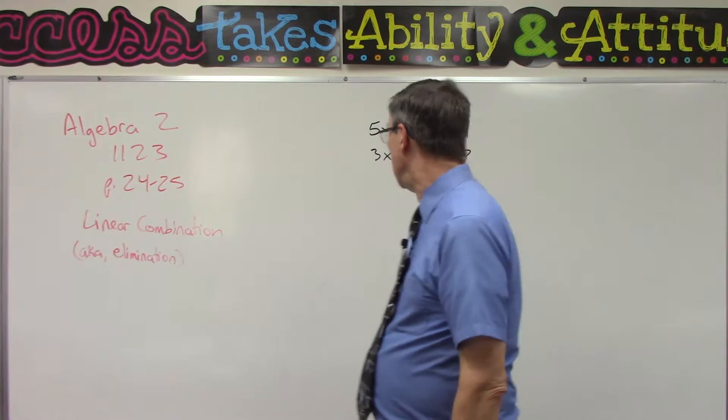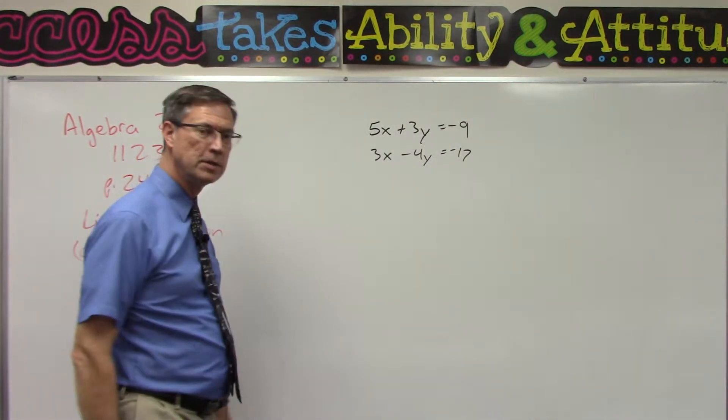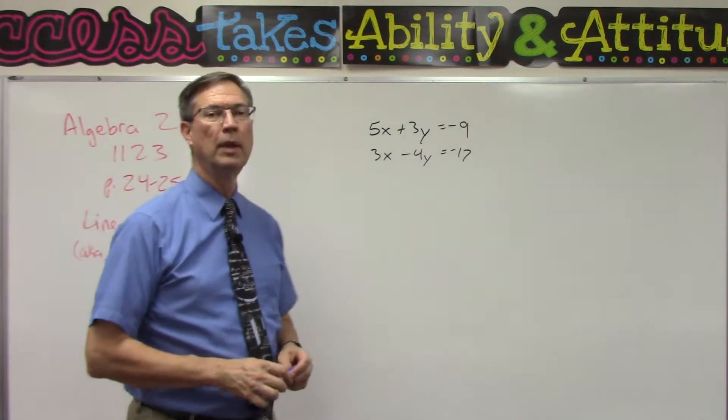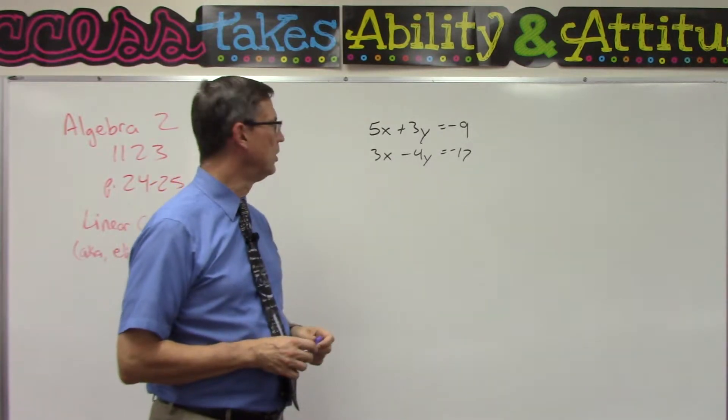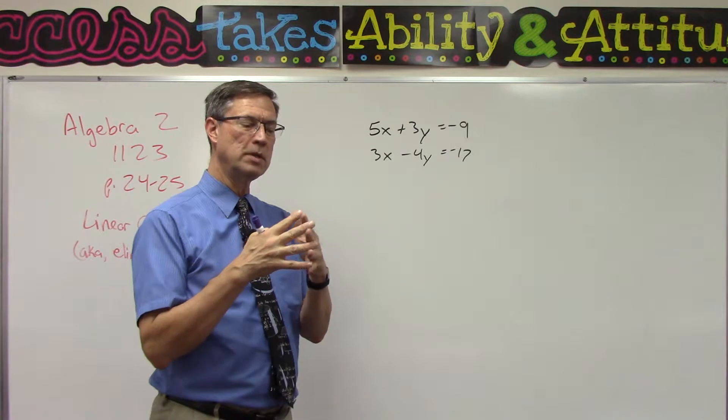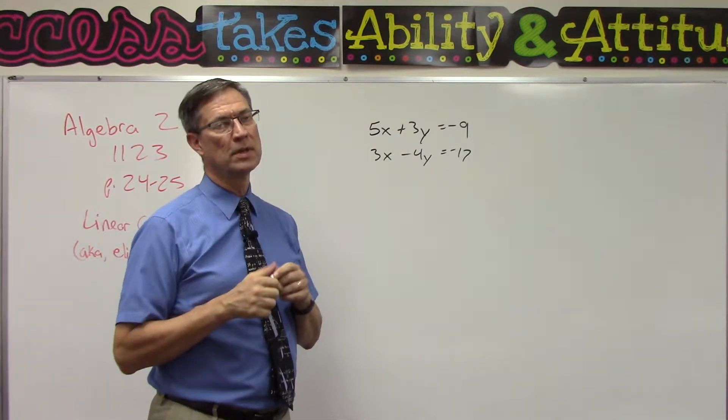Other books, like Saxon Math, teach this method of course, but they call it the method of elimination. Basically, it's a way of putting two equations together and trying to find the x and y coordinates of where those two lines would intersect each other.